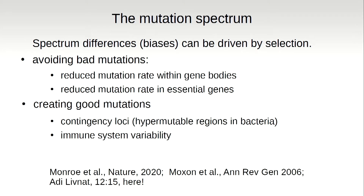Especially at larger levels of organization — at the gene level — we know that spectrum differences and mutational biases can be driven by selection. Selection can act to avoid bad mutations, so we have many examples where the mutation rate is reduced in gene bodies or essential genes. And selection can also act to create good mutations, so the mutation rate can be increased in places where variability is favorable. For example, in bacteria, the so-called contingency loci are hypermutable, or in our immune system — there are many beautiful examples.